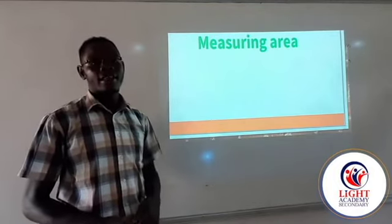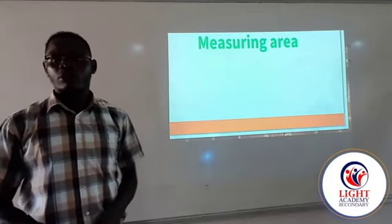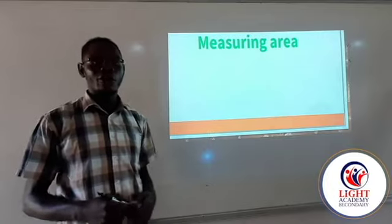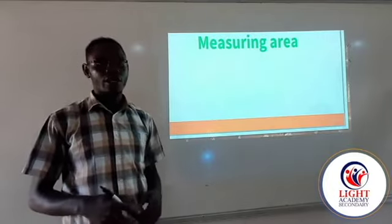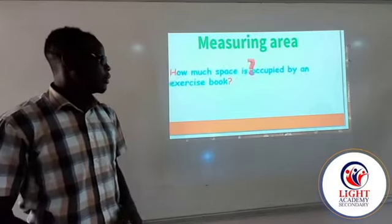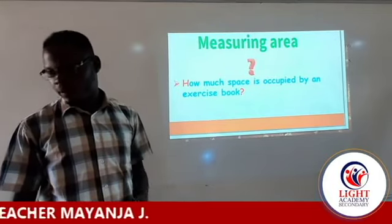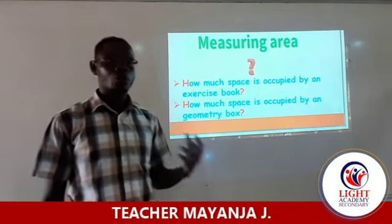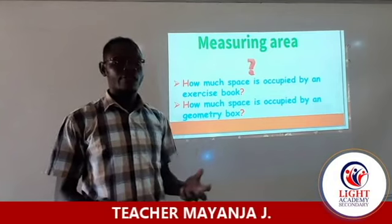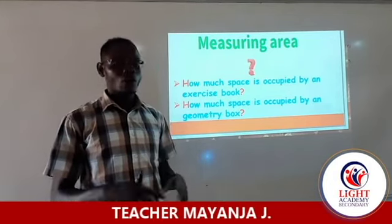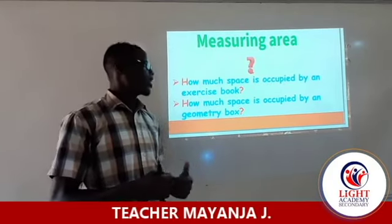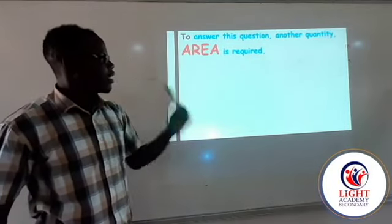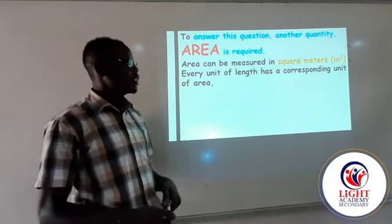We want to continue with another quantity called area. This is a common word — you'll find many people talking about the area of a geometry box, the area of a shoe, the area of a football pitch, the area of a TV screen. The major question here is: how much space is occupied by an exercise book, or a geometry box, or the computer, TV, or tablet at home? To answer all those questions, the quantity area is required, and area can be measured in square meters.